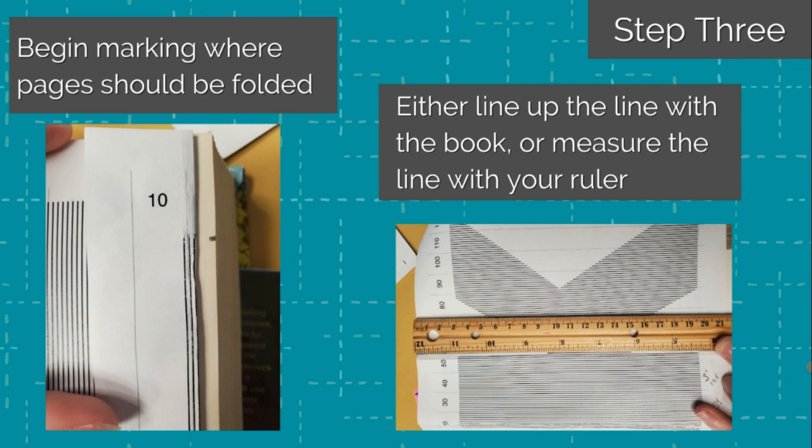To start measuring the locations where you will need to fold, line up the template with the top of the page and mark the top and bottom of each letter. It will help if you fold or cut your template at each black line as you go. You could also use your ruler to either draw perpendicular lines from the template onto the page, or to find the measurements of where each pencil mark should be. The latter method especially helps when you have big sections of the same measurements.